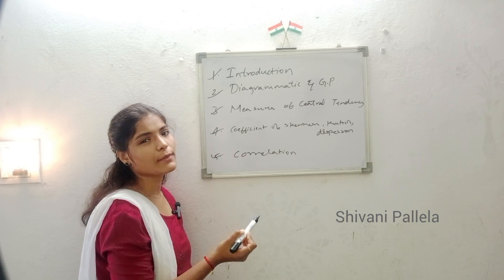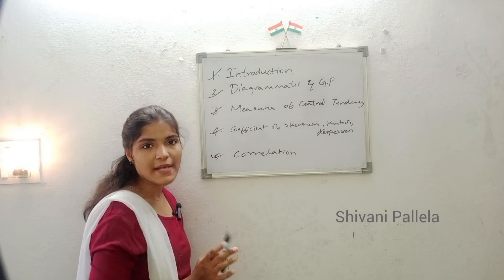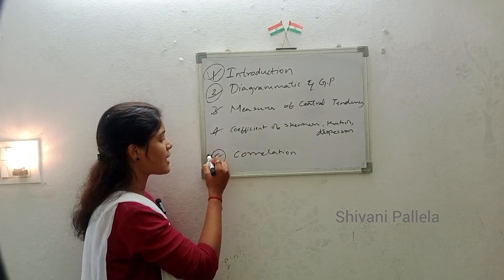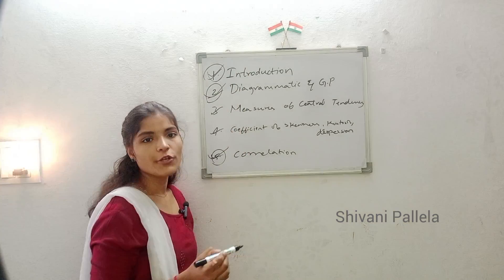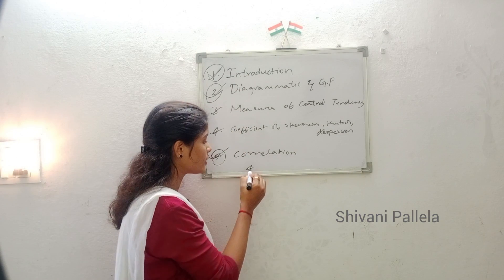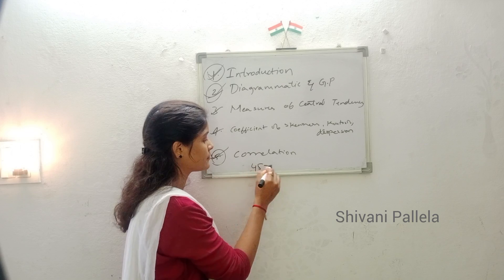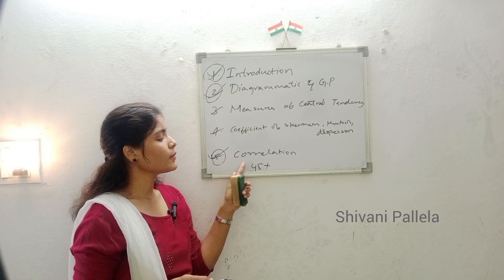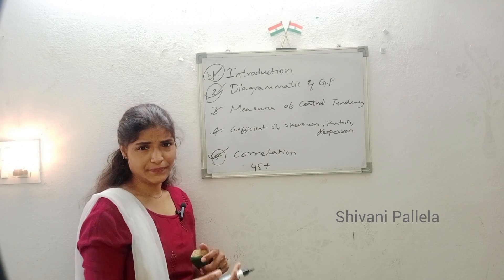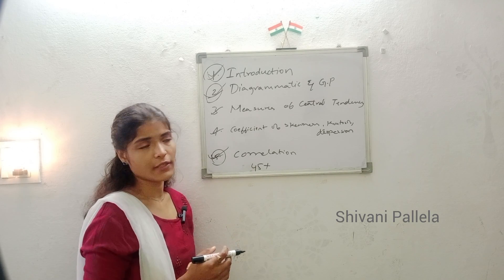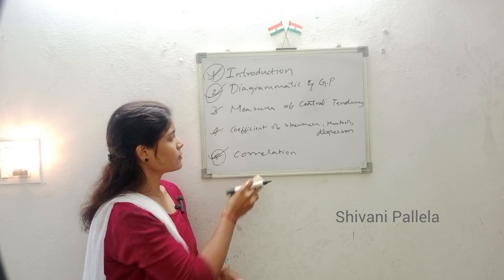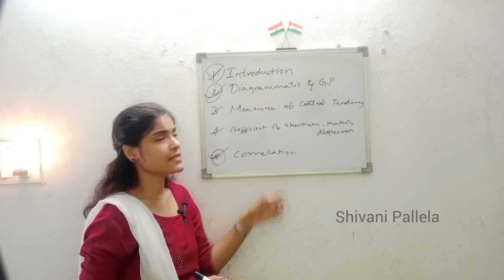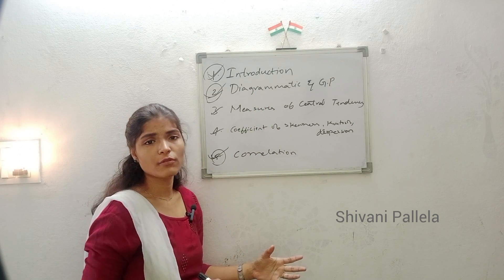Now we will discuss each unit — what topics you are having and what topics you need to learn. For students who want only passing marks, you need to prepare the first chapter, second chapter, and fifth chapter. If you prepare these three chapters you will get above 45 marks. So prepare and concentrate on units one, two, and five for passing marks.